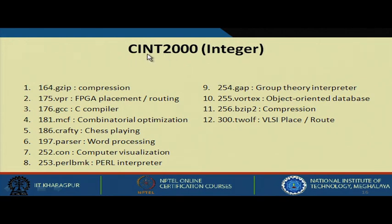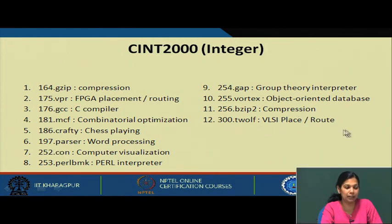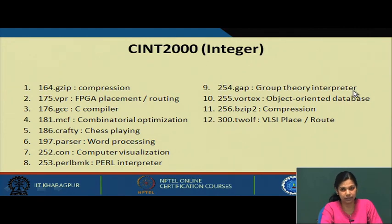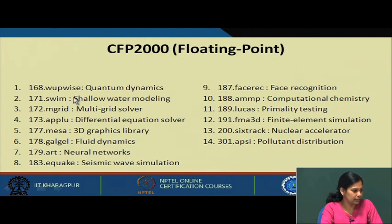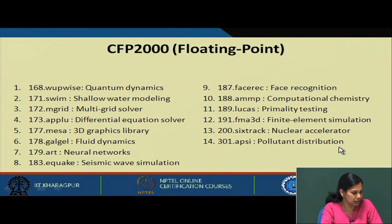CINT 2000 (integer benchmarks) consists of 12 programs, adding new ones such as VLSI place-and-route and a group theory interpreter not present in SPEC 95. CFP 2000 (floating point benchmarks) includes quantum dynamics programs from before, plus newly added programs such as neural networks, pollutant distribution, and nuclear accelerator simulation.